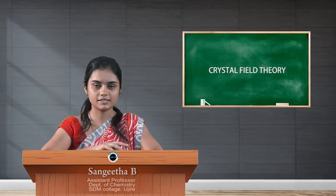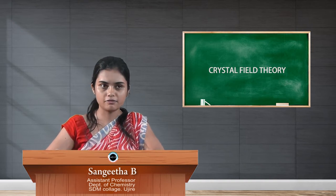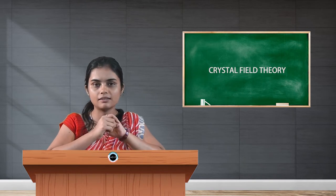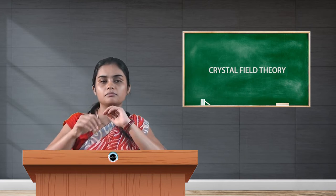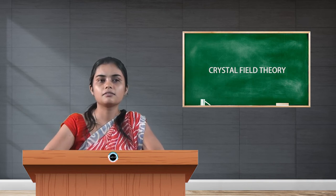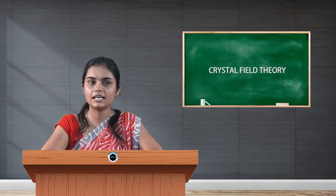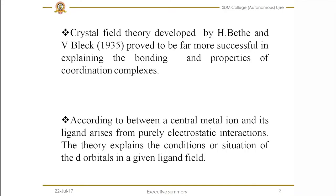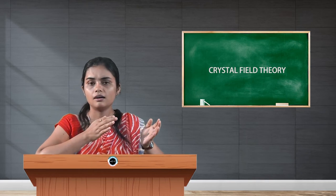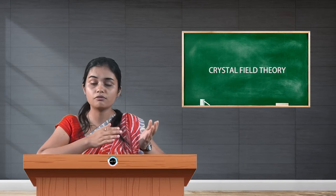Today in this video we shall discuss about CFT, that is Crystal Field Theory. In my last video I discussed about the postulates and limitations of VBT. There are a few limitations, and those limitations are overcome by this particular theory, CFT. Crystal Field Theory was developed by H. Bethe and V. Vleck in 1935, which proved to be far more successful in explaining the bonding and properties of coordination complexes. According to this theory, the interaction between the central metal ion and ligand is purely electrostatic. The theory explains the condition and situation of the orbitals in a given ligand field, and it successfully explains the drawbacks and limitations of VBT.